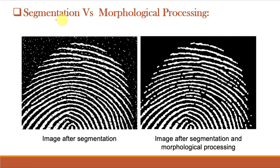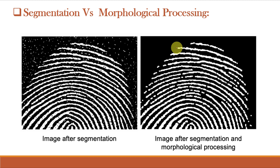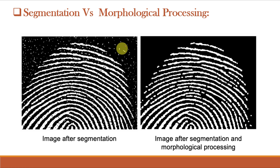Let's go ahead and understand segmentation versus morphological processing. There is a slight overlap between morphology and image segmentation. Morphology consists of methods that can be used to pre-process the input data of image segmentation or post-process the output of the image segmentation stage. For example, an image after segmentation may also consist of noise that is undesirable, so we need to remove this noise using morphological image processing.